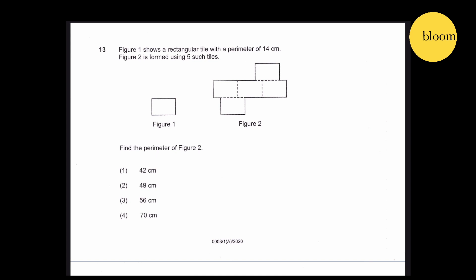Question 13: Figure 1 shows a rectangular tile with a perimeter of 14 cm. Figure 2 is formed using 5 such tiles. Find the perimeter of Figure 2. We know Figure 2 is formed out of 5 such tiles. Therefore, we need to subtract the overlapping edge lengths — 2 of this length, 2 of this length, and 2 of this length.